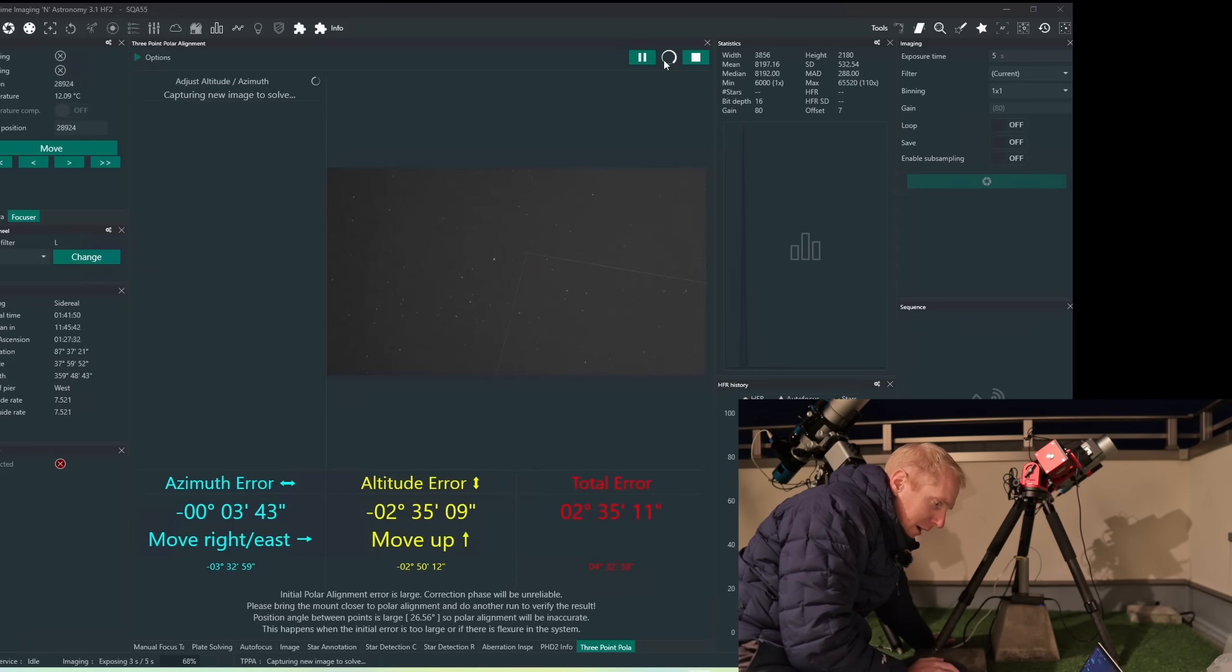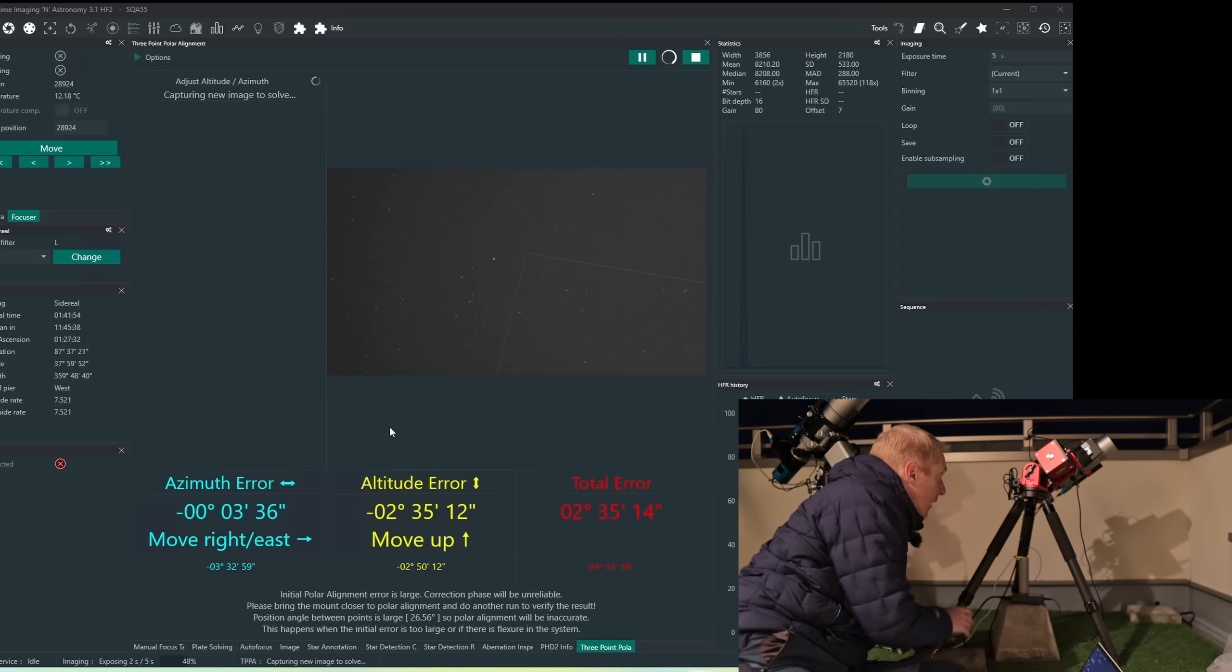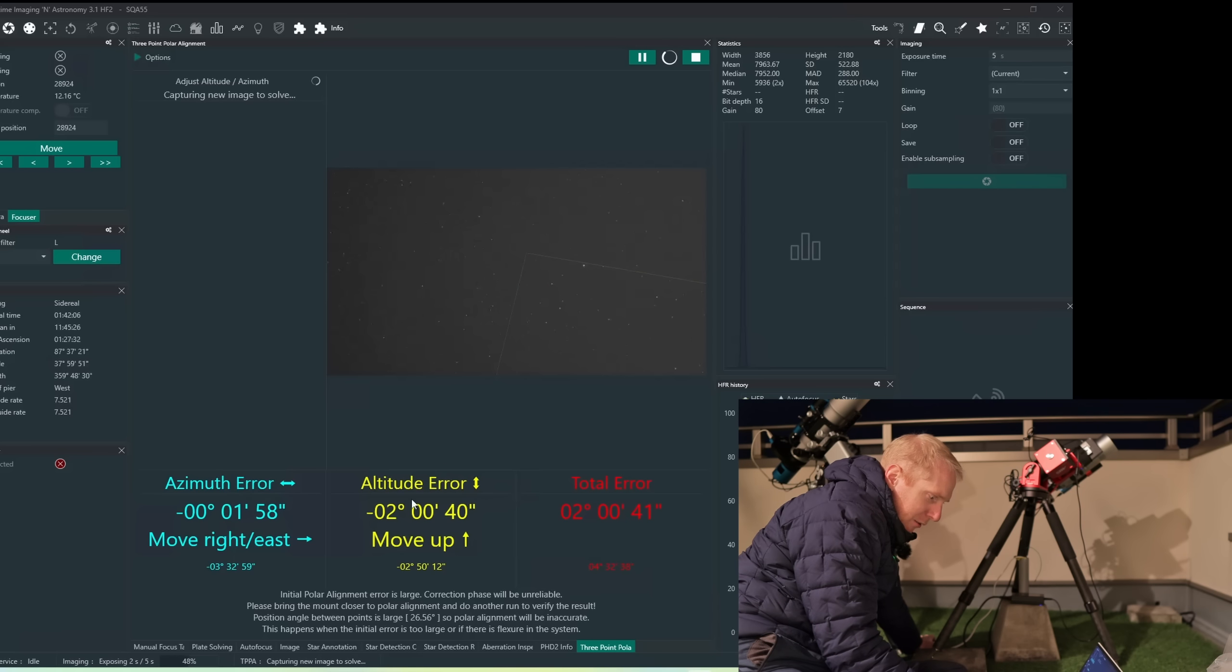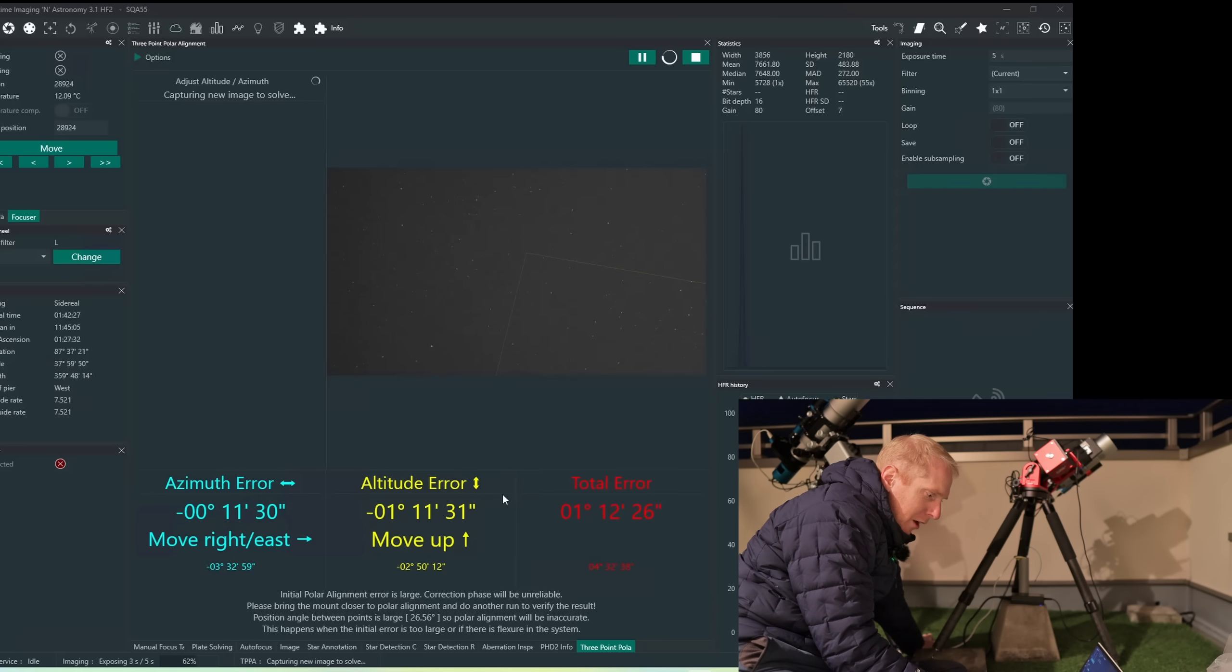I'm actually very close now in terms of the left-right movement. And I also need to move the mount up by 2.5 degrees. And as you can see, as I was moving the mount up a little bit, the azimuth was also affected, just like I expected. And as I moved the mount up again, the azimuth is even more affected, although it's not as catastrophic as I imagined it would be.